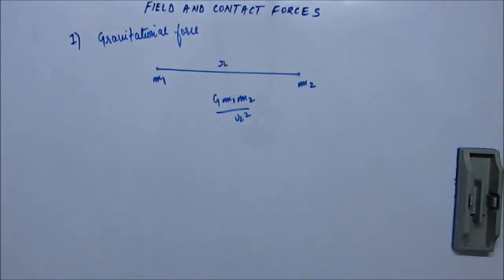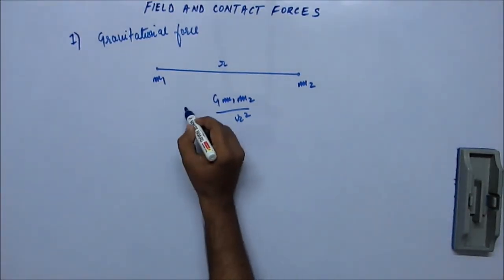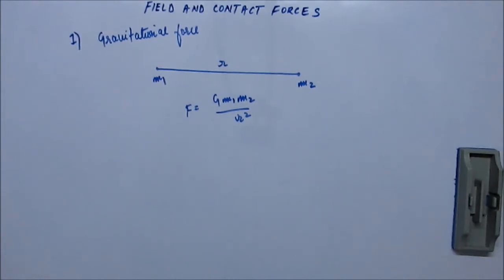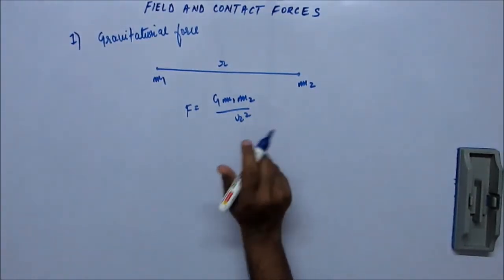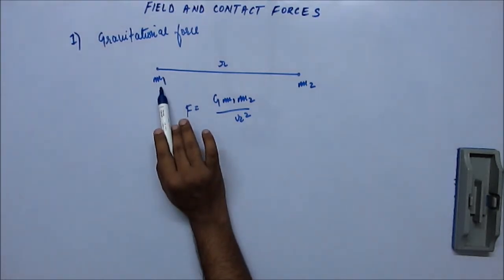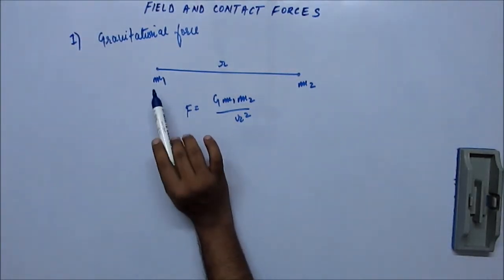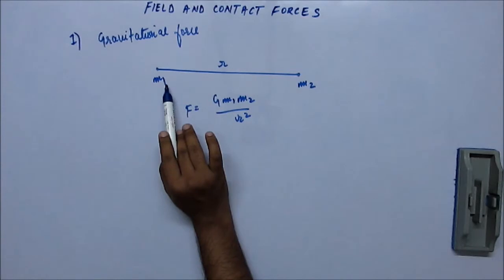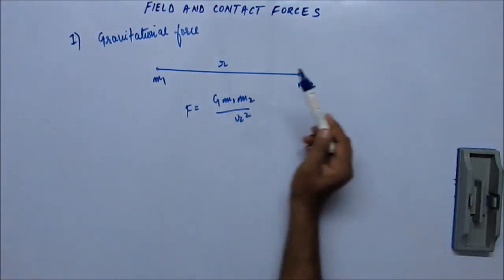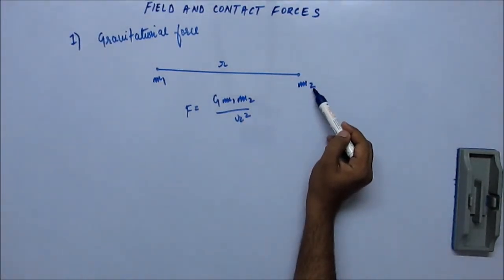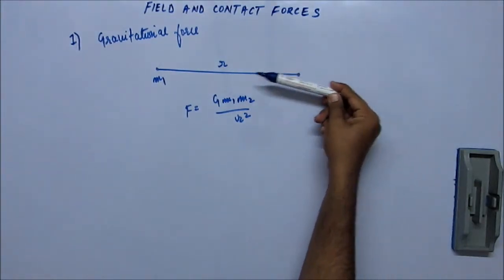M1 and M2 are the masses, R is the distance between them. This is the magnitude of gravitational force. It is an attractive force, so for M1, the direction of force would be towards the center of mass M2, and for M2, the direction of force will be towards the center of mass M1.